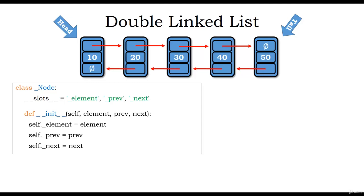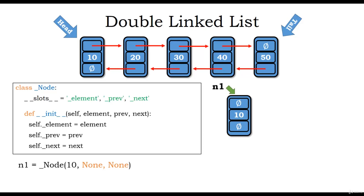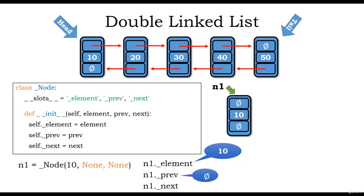For example, when the statement n1 = Node(10, None, None) is used in Python, a new node n1 is created where element is 10 and both next and previous point to null or none. We can access the instance variables: n1.element contains 10, n1.previous contains null, and n1.next contains null.